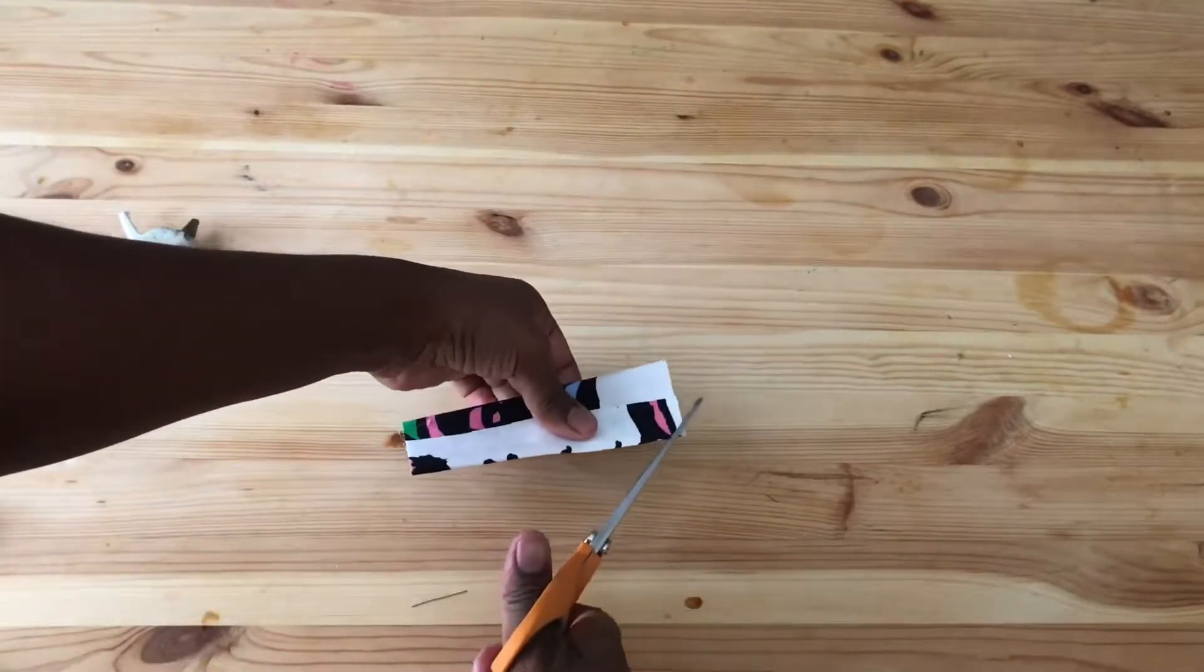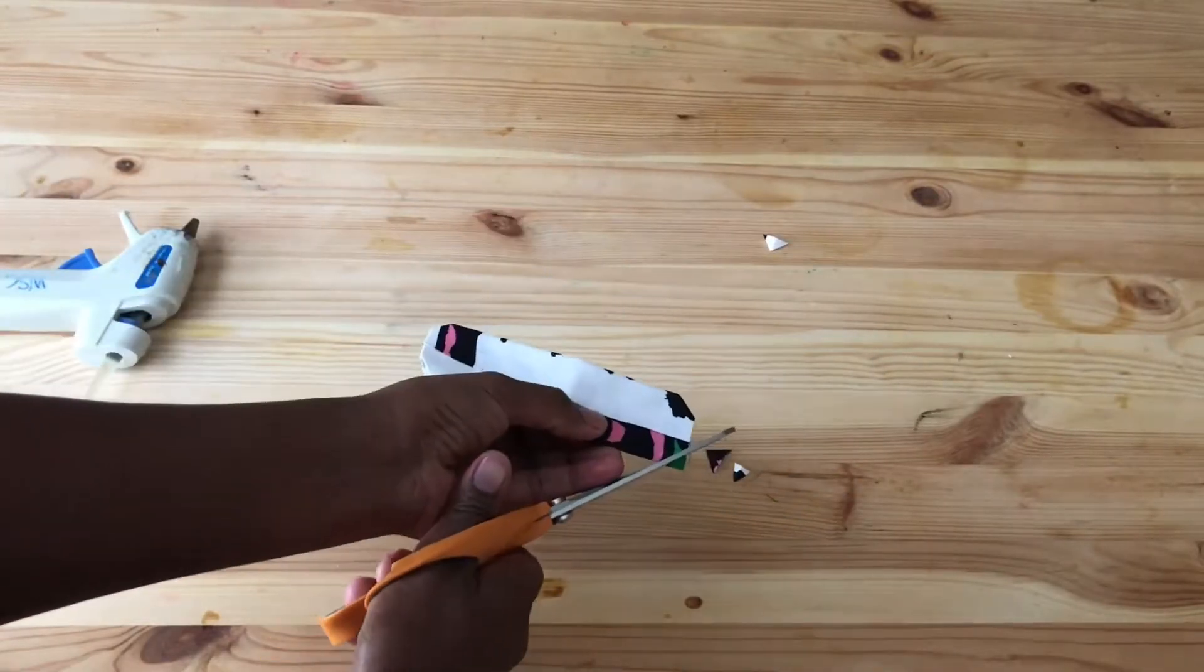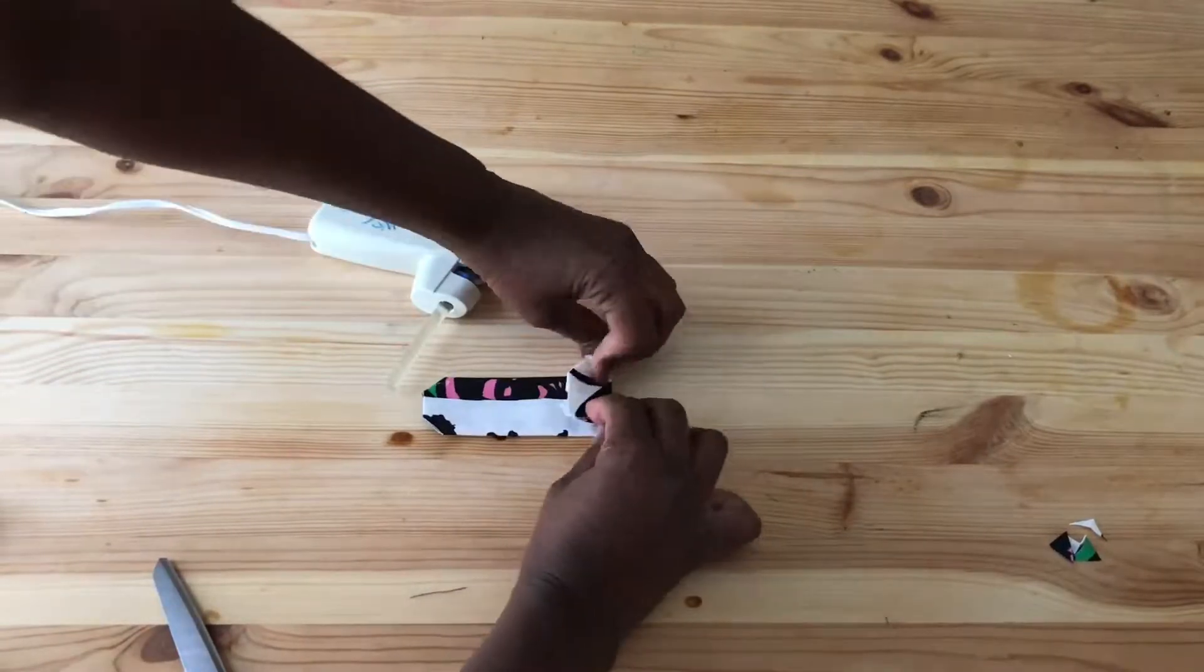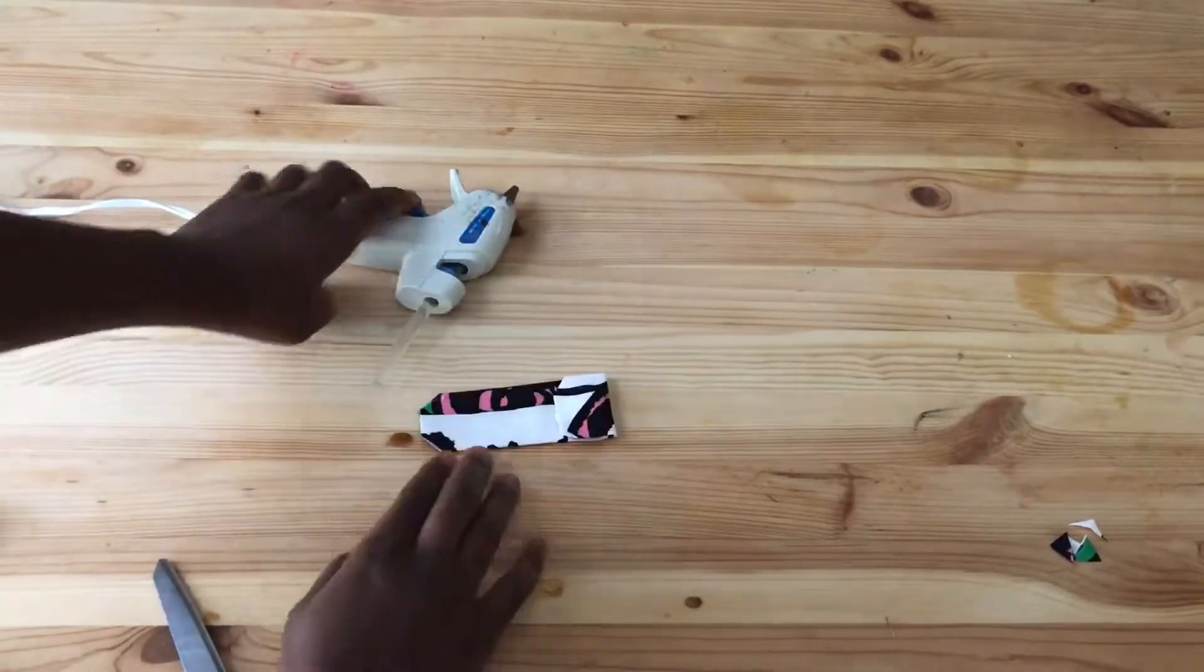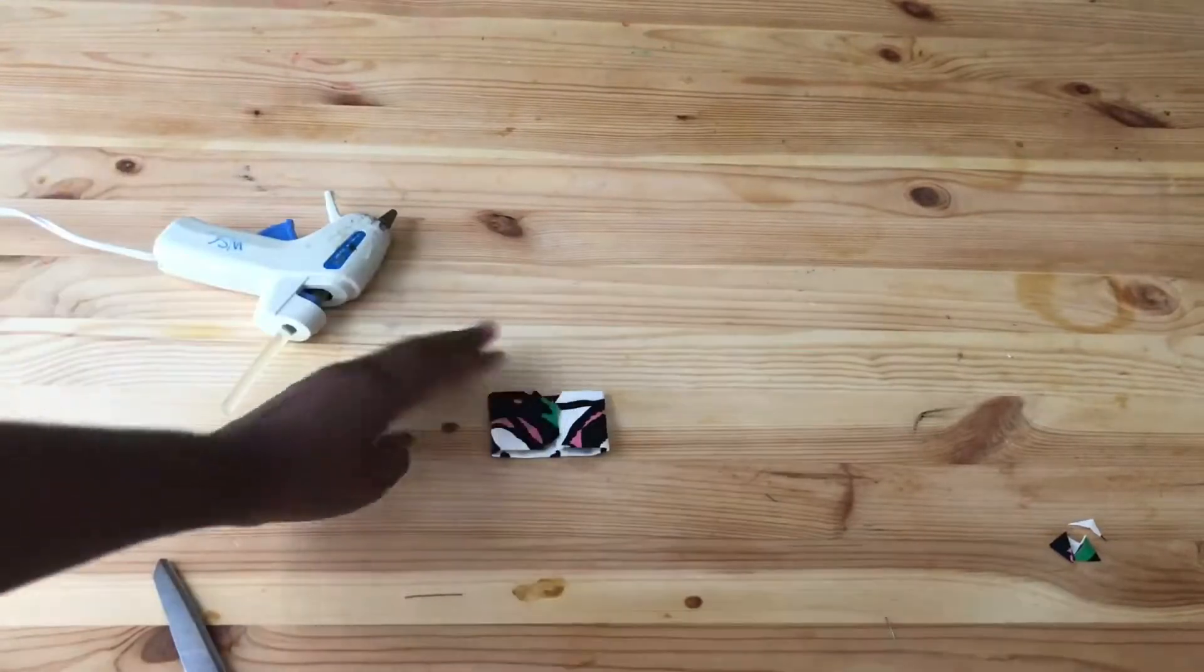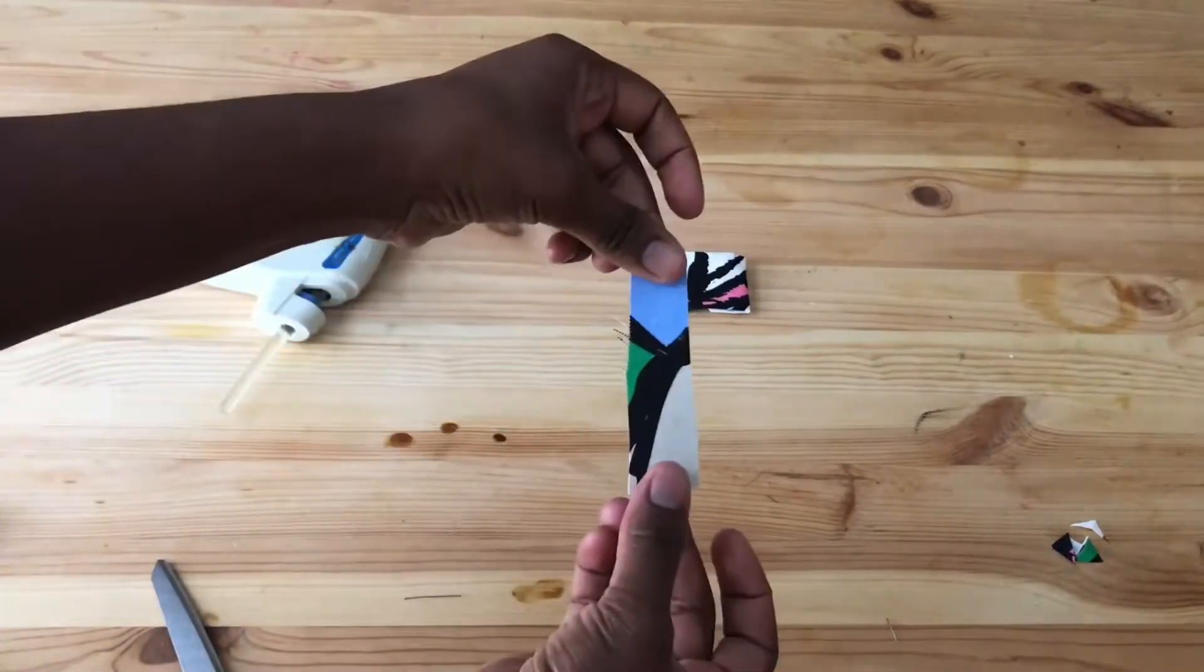After that we take our scissors and we're going to clip the ends in a diagonal form. And then we take our ends and we hot glue our ends to match the center. So we hot glue both ends to match the center, and so it's starting to look like a bow. Put it to the side.